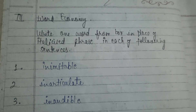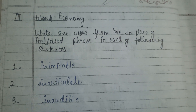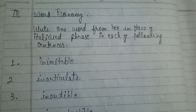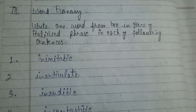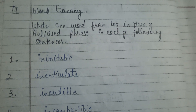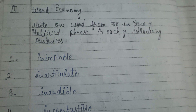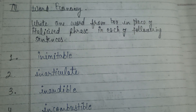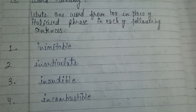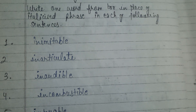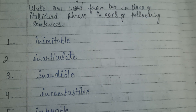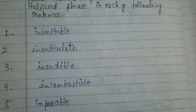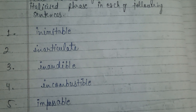The next part is Word Economy. The question is: write one word from the box in place of the italicized phrase in each of the following sentences. 1st answer is inimitable.